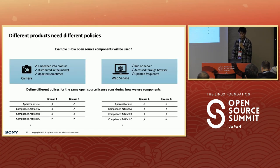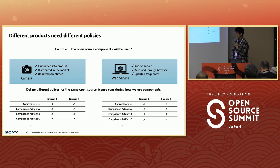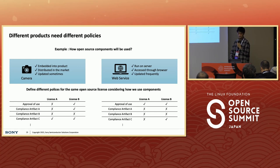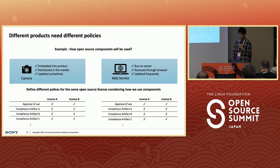Another example: open source license policies. It depends on how open source components will be used. When we make a camera device, open source software will be embedded into the product, distributed in the market, and software updates will be done sometimes. But when we make a web service, open source software will run on a server, accessed through web browsers, and software will be updated frequently. When we define policies, we need to define different policies for the same open source license, considering how we use components. Some licenses cannot be used in camera devices, but it's okay to use them in web services — different products need different policies.